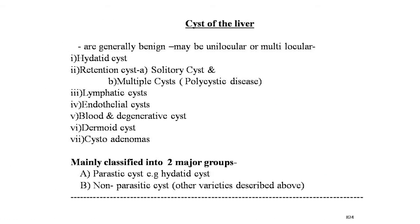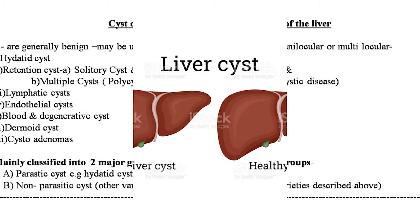Cysts of the liver are generally benign and may be unilocular or multilocular. They include the hydatid cyst, retention cyst, solitary cyst, multiple cysts, polycystic disease, lymphatic cyst, endothelial cyst, blood and degenerative cyst, dermoid cyst, and cystadenoma. These are mainly classified into two major groups: parasitic cyst (the hydatid cyst) and non-parasitic cyst (all other varieties).